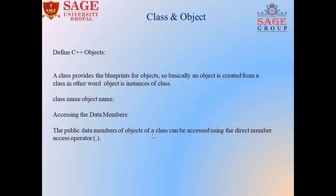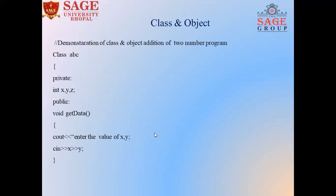Now let's have a demonstration of class and object with an addition of two numbers program. First, we write the class keyword followed by the class name ABC — the name depends on the user. We open the body of the class with curly brackets. Then we use the access specifier private with a colon symbol, and we declare three integer variables: x, y, and z. Next, we use another access specifier public with a colon symbol. Public is useful to access from anywhere in our program, while private is accessible within a class only.